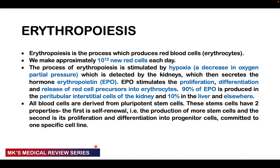The process of erythropoiesis results in the synthesis of red blood cells. We make approximately 10 to the power of 12 new red blood cells each day, in response to hypoxia — a decrease in oxygen partial pressure. As oxygen partial pressure decreases, it is detected by the kidneys, resulting in production of erythropoietin from the peritubular interstitial cells. Erythropoietin stimulates proliferation, differentiation, and release of reticulocytes. 90% of erythropoietin comes from the kidneys, 10% from the liver, and sometimes elsewhere such as the brain.